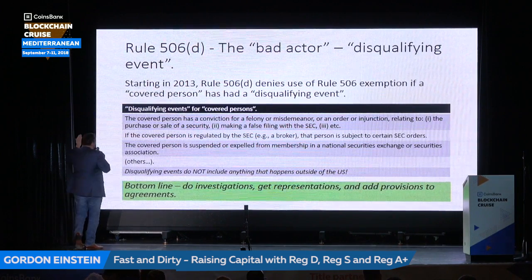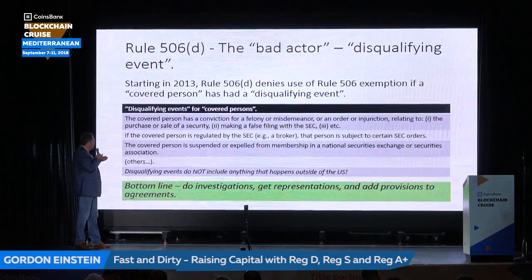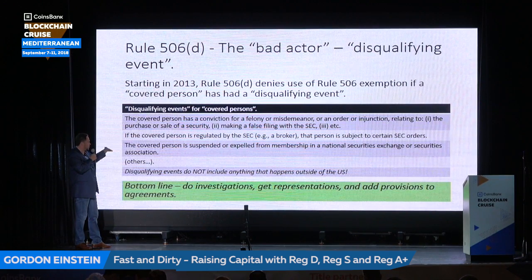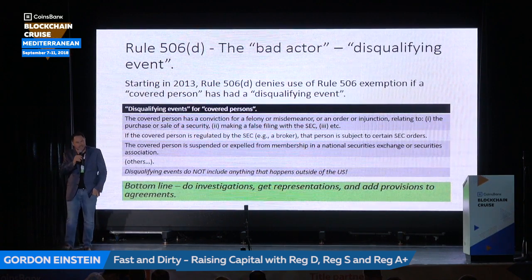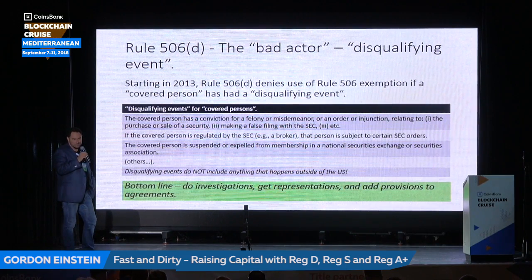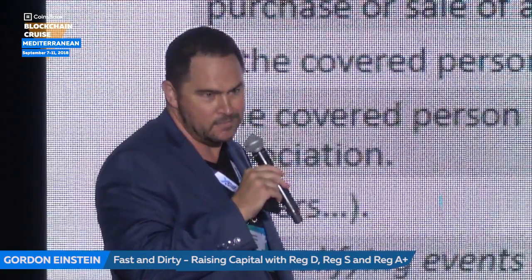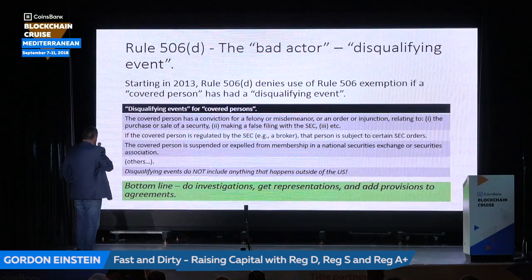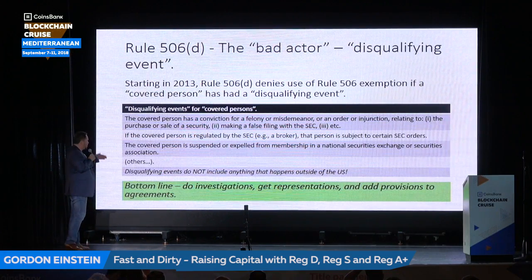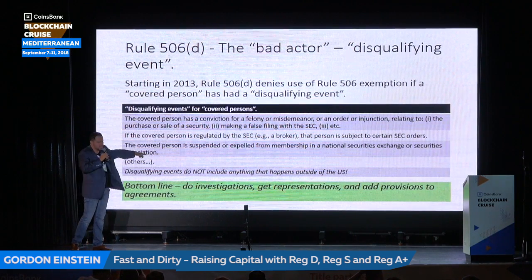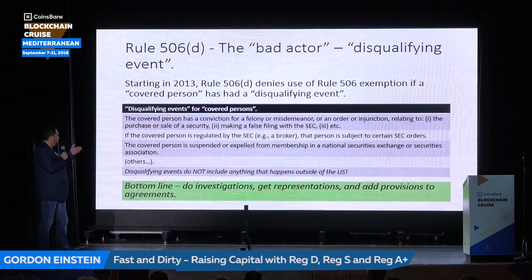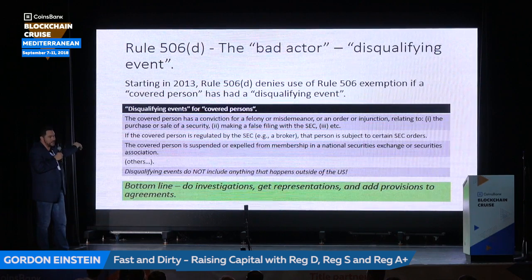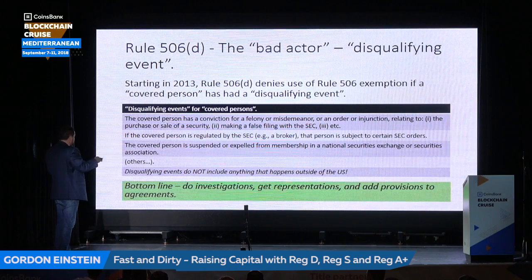What's a disqualifying action? They had a felony or misdemeanor related to securities, or they're a regulated broker subject to certain SEC orders, or they're part of a national securities exchange and got suspended. Notably, disqualifying events do not include anything that happens outside the United States — so you could get convicted for fraud in England and move to the US and technically not be a bad actor. The bottom line when you want to do Reg D: you need to investigate your people, get representations from them — they sign a document saying they're not a bad actor — and add provisions to your agreements with brokers or finders saying if they're a bad actor, they're out.